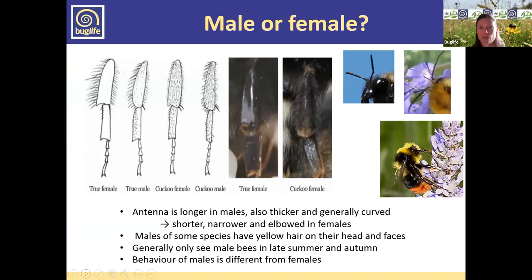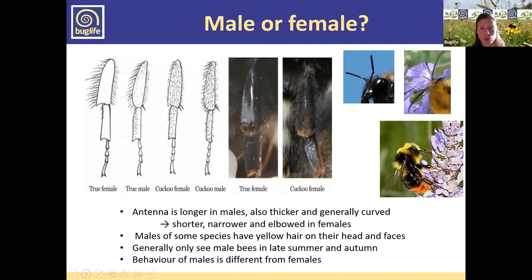Once we have a bumblebee, how do we know whether we've got a male or a female, and whether the female is a queen or a worker? Queens and workers have pollen baskets. The shape of the legs will really tell you — often you'll see queens and workers with pollen on their legs. Males have longer antennae than females. Queen bumblebees are noticeably larger than workers or males, which is another really good one to look out for once you've got your eye in.